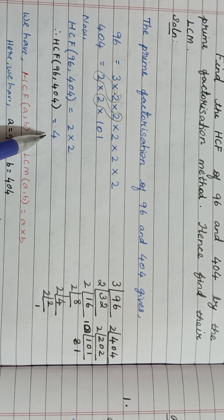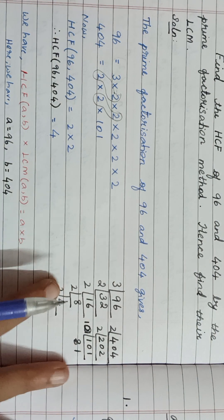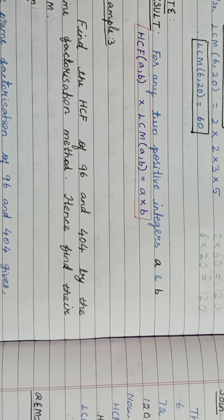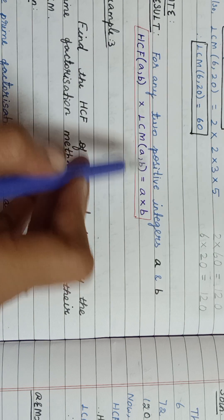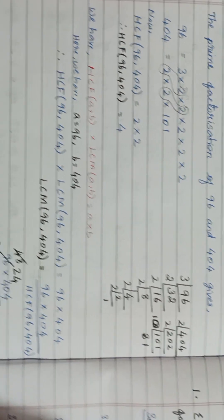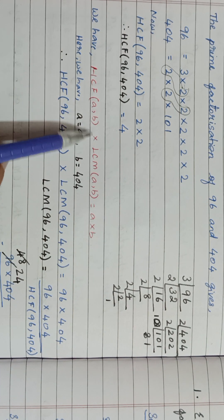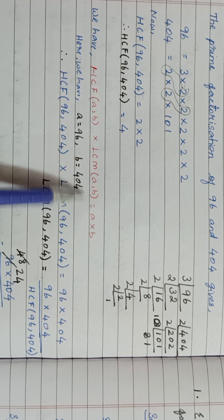Now we are finding LCM, not by prime factorization method, but using this result. Already we learned that HCF(A, B) × LCM(A, B) = A × B.